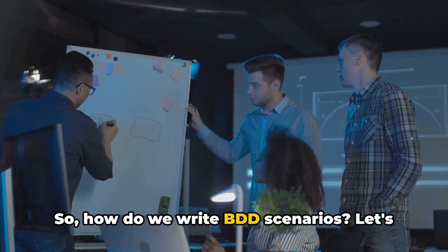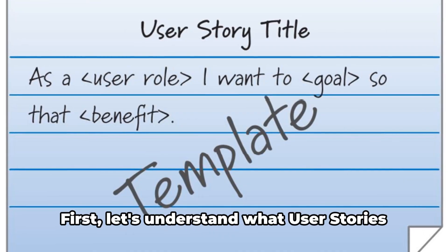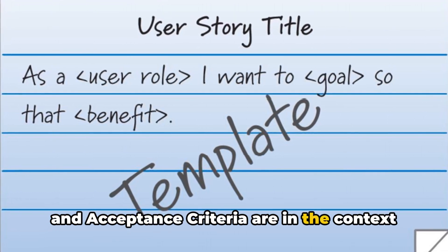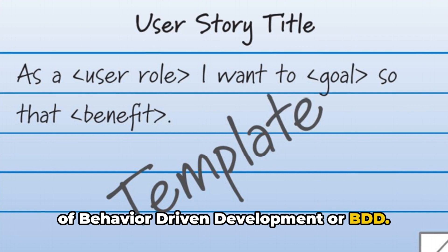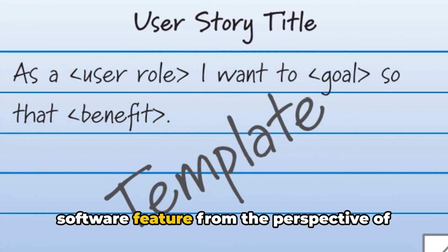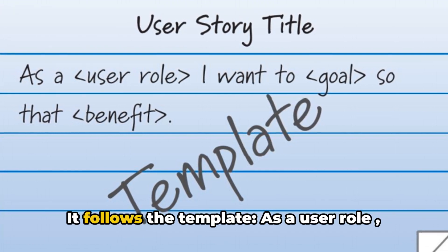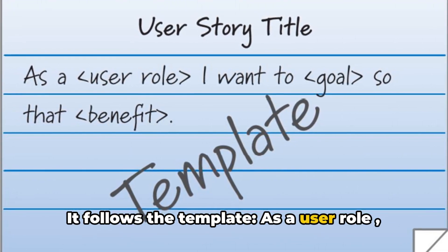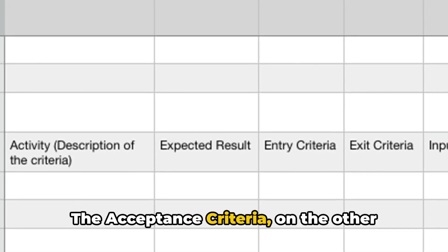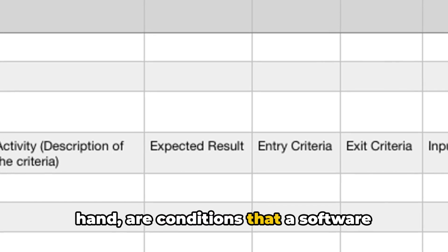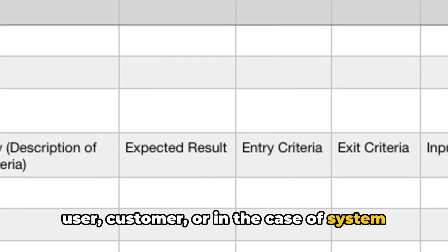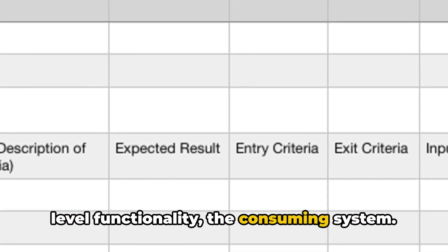So, how do we write BDD scenarios? A user story is a simple description of a software feature from the perspective of the end user. It follows the template: as a user role, I want an action so that benefit value. The acceptance criteria, on the other hand, are conditions that a software product must satisfy to be accepted by a user, customer, or in the case of system-level functionality, the consuming system.